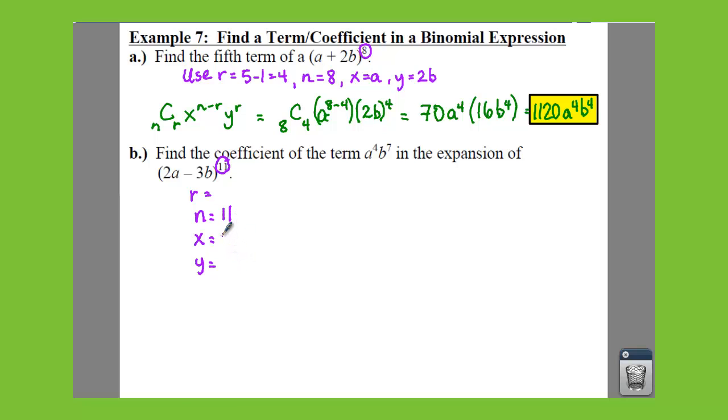r is 1 less than whatever you're trying to find. Well, in this case, we're trying to find, if you look at your formula, this is y to the r power. So that means this 7, that is your r.